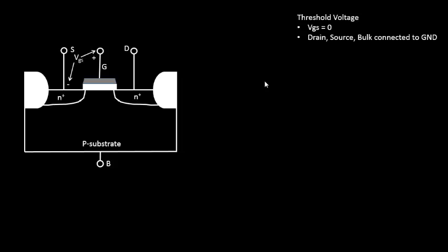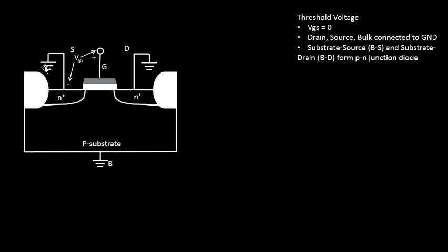We will ground the drain, source, and bulk terminals. So the source terminal, drain terminal, and body terminal are all grounded. The drain and body form a PN junction diode, and the body and source again form a PN junction diode. Both these diodes are biased at zero volts, so both junctions are off, and you see an extremely high source-to-drain resistance — basically zero current flow between source and drain.